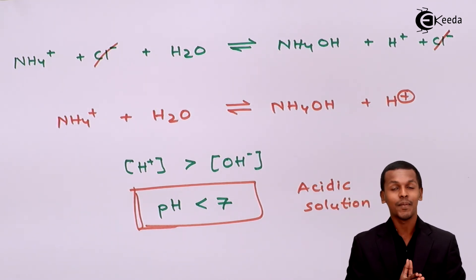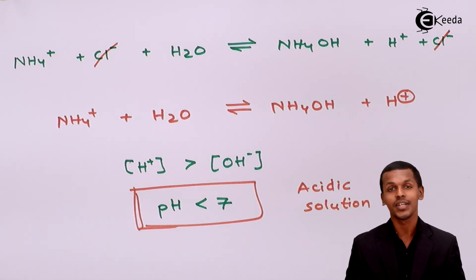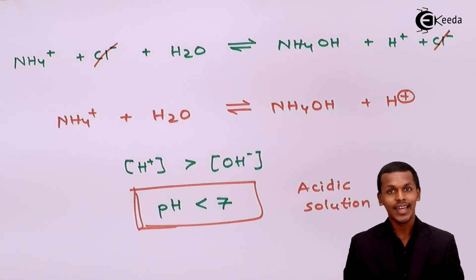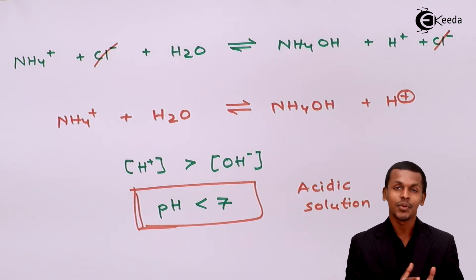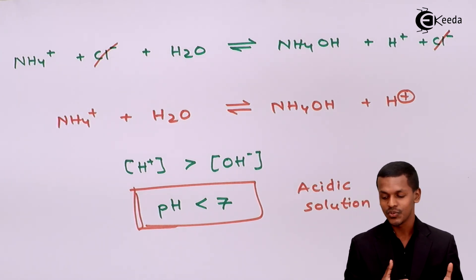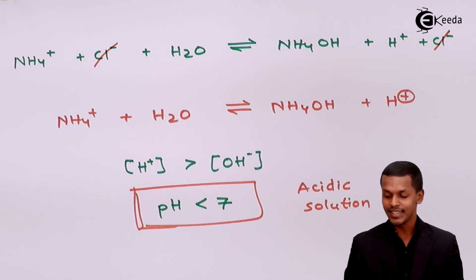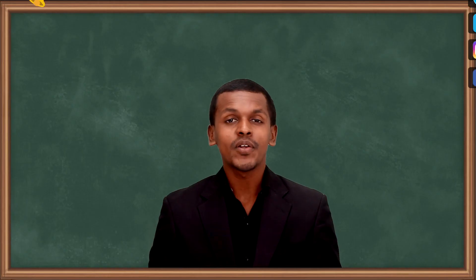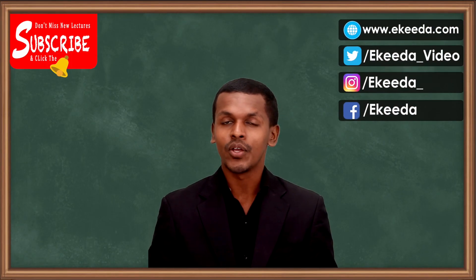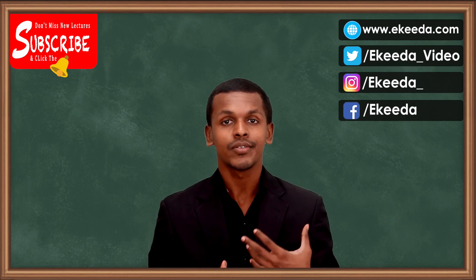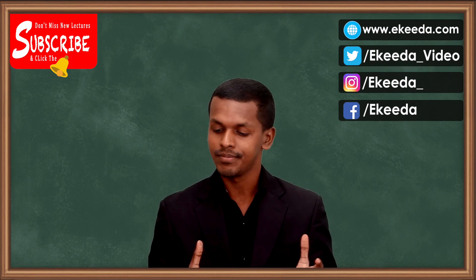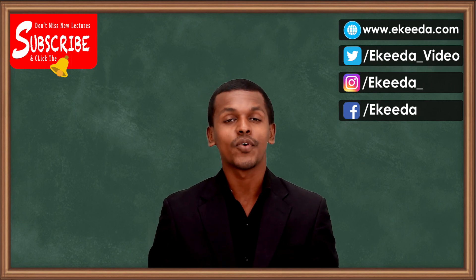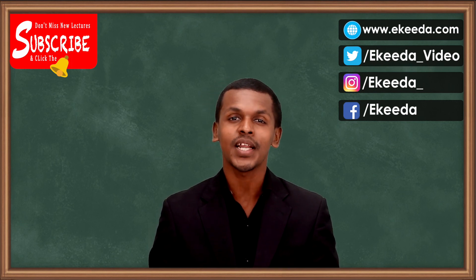This is how water, which is neutral in nature, can be made acidic by adding a salt like NH4Cl — which is derived from a weak base and a strong acid. Thank you friends for watching this video. I hope you understood how adding such a salt makes the solution more acidic. Please share this video and don't forget to subscribe to the e.k.da channel.